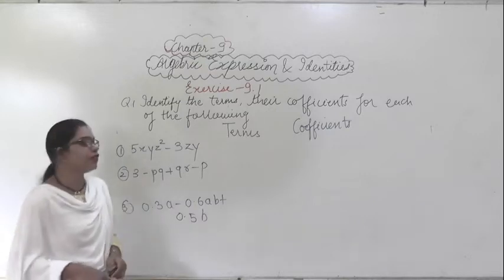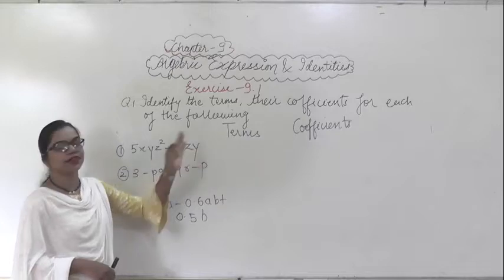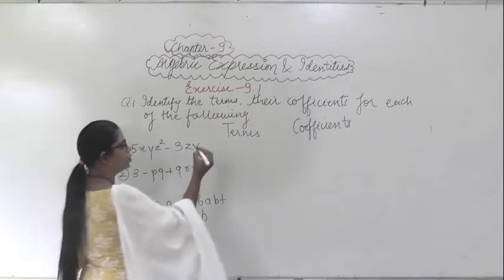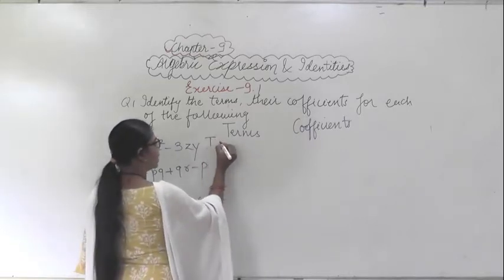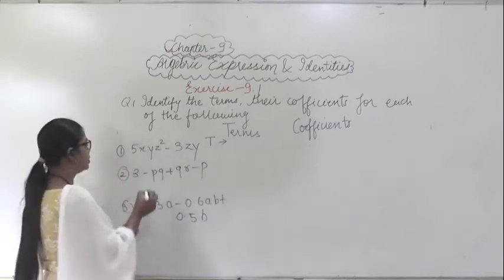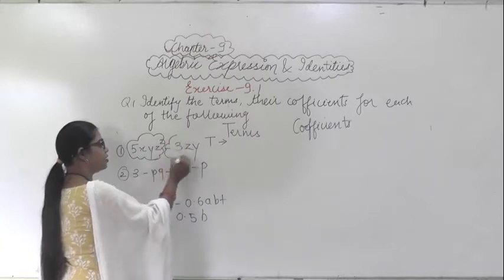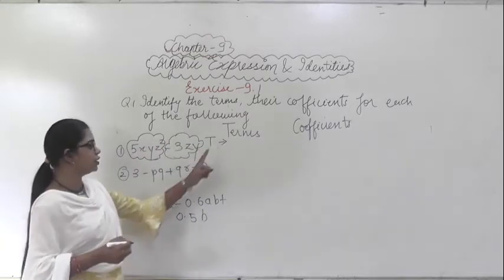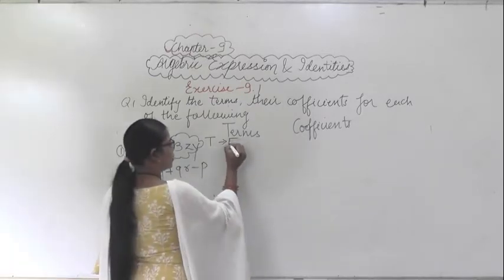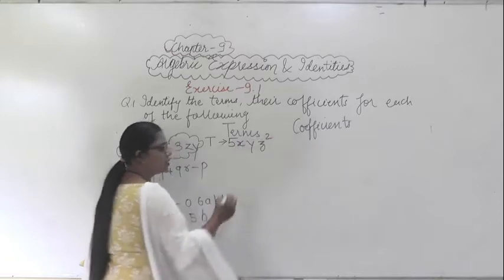So the first question is 5xyz² minus 3z⁵. First I will write down the terms, and after that I will write down the coefficients. How many terms are there? The first term is 5xyz² — this is term 1.